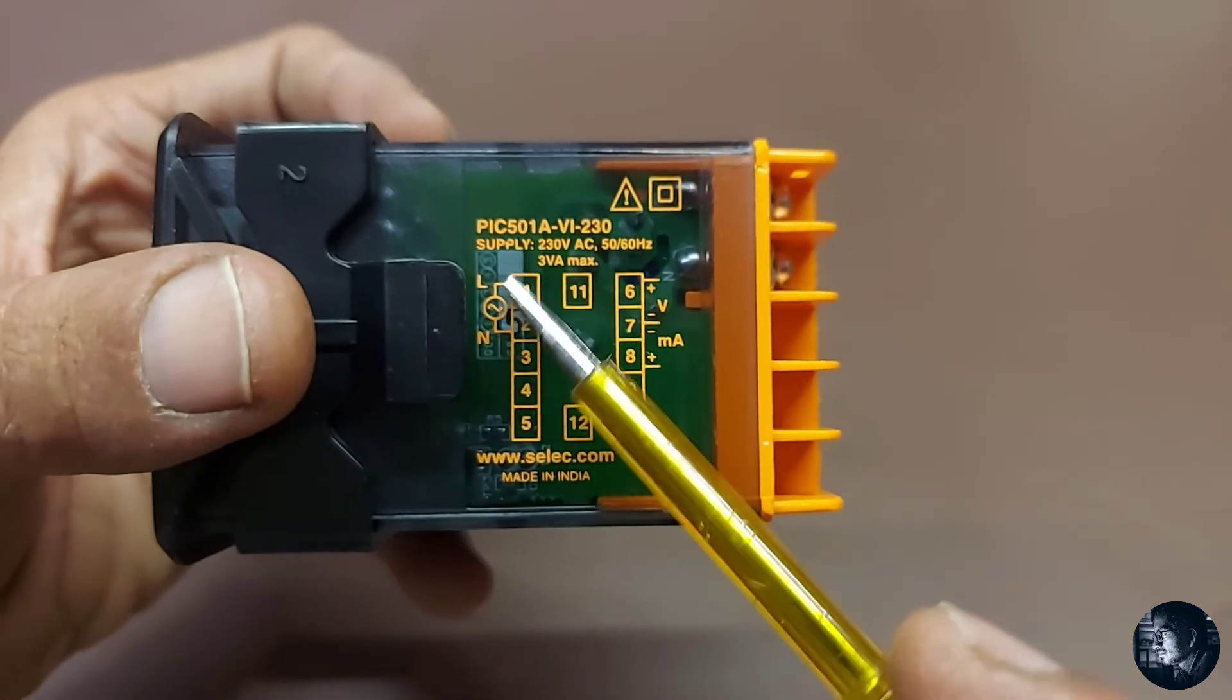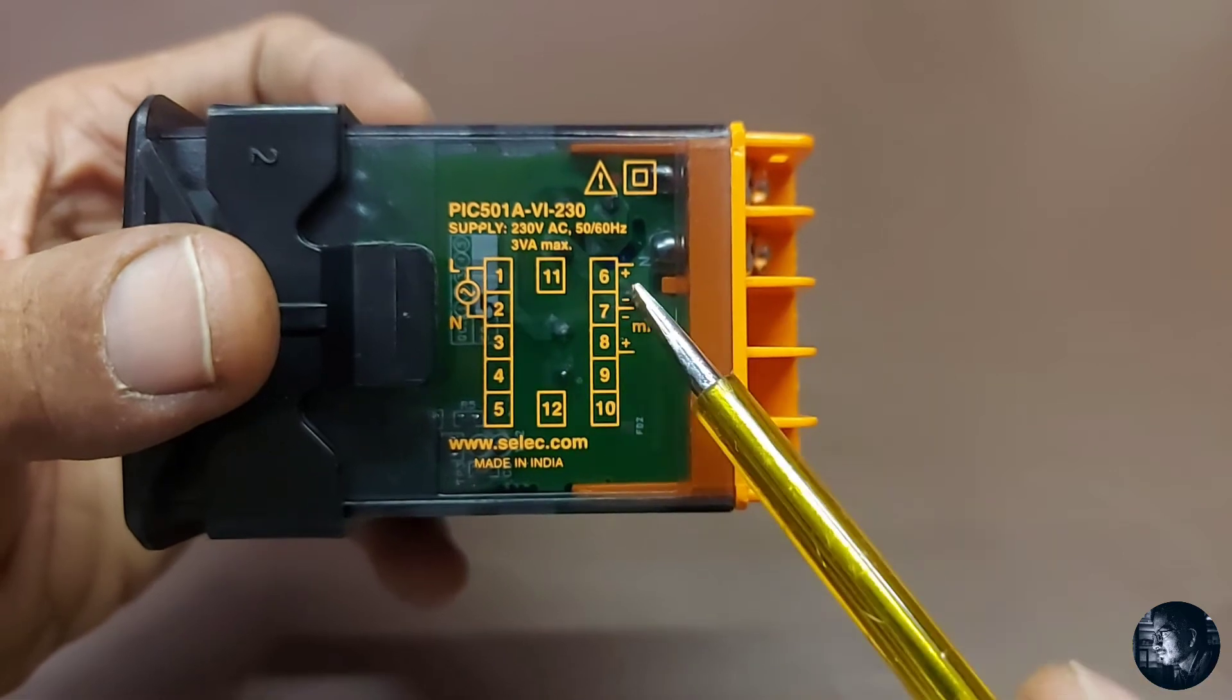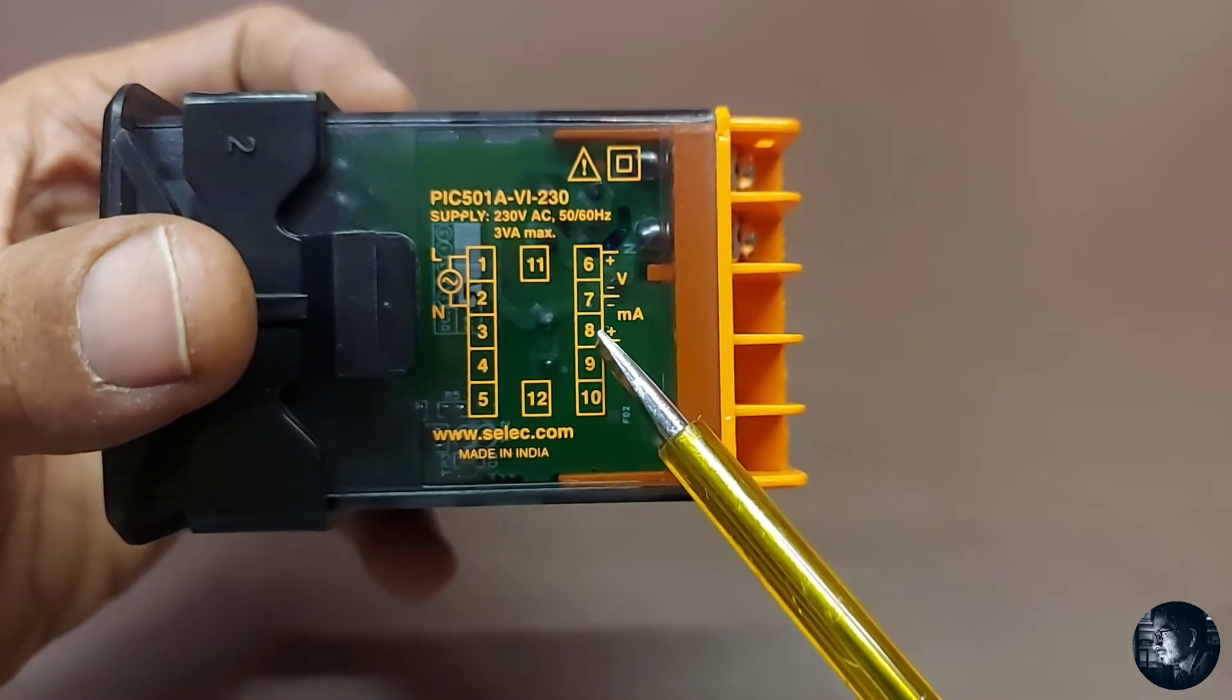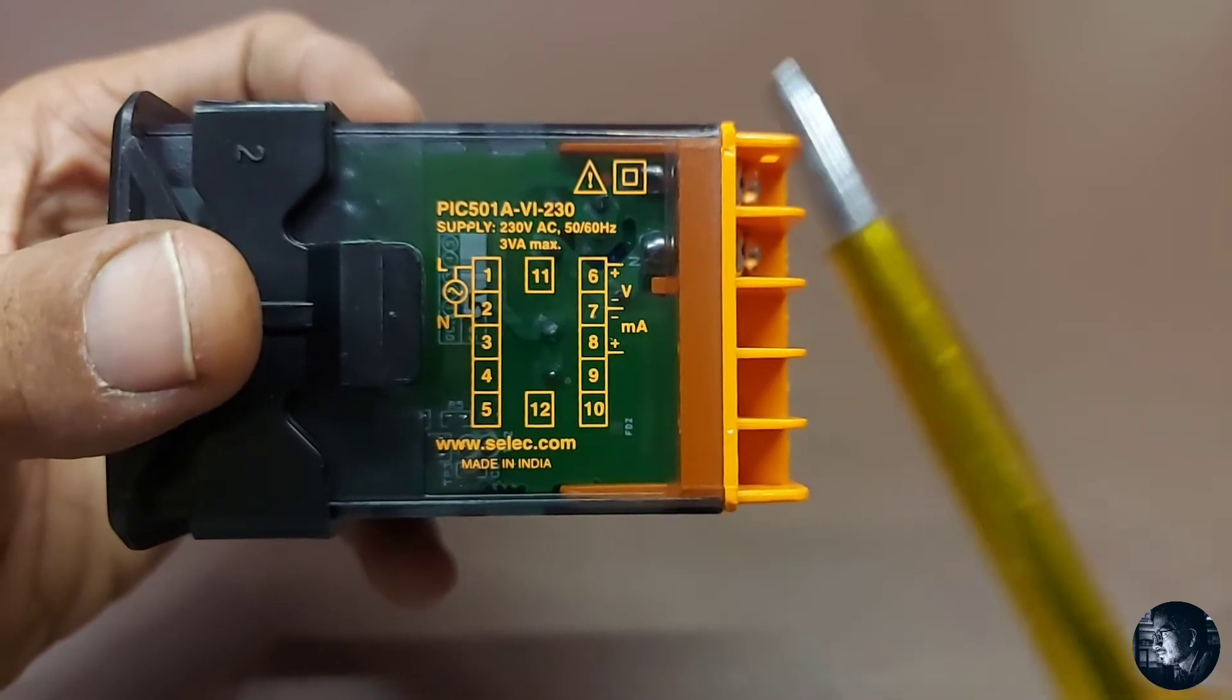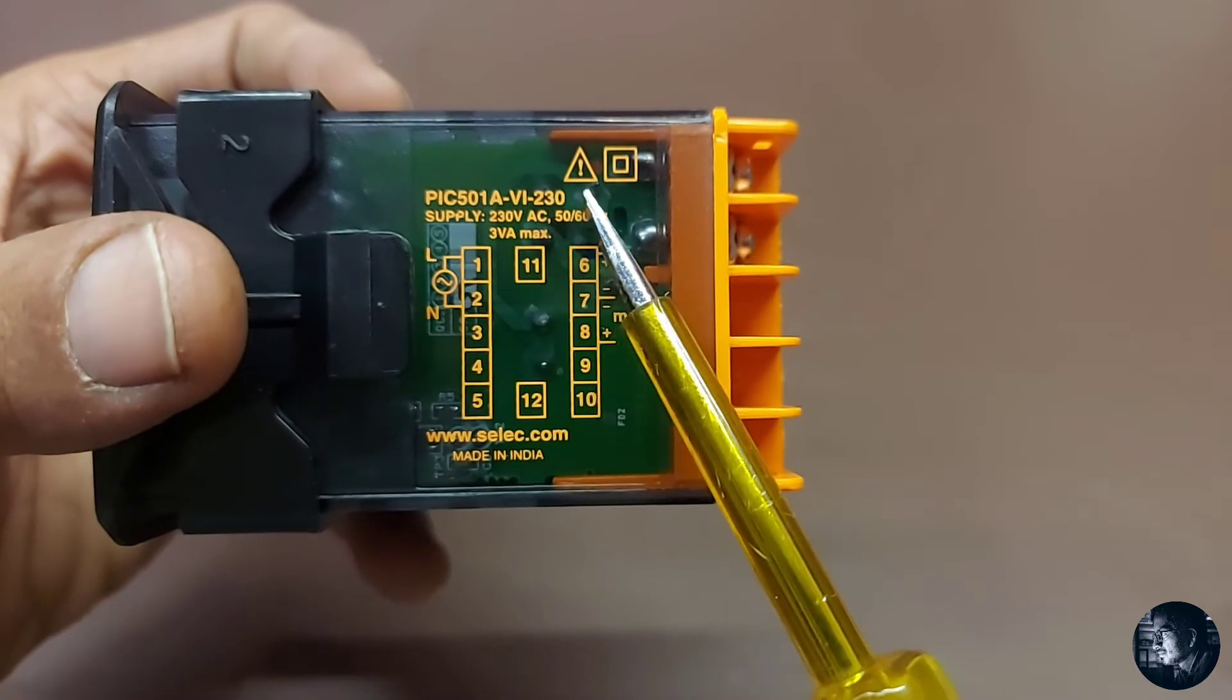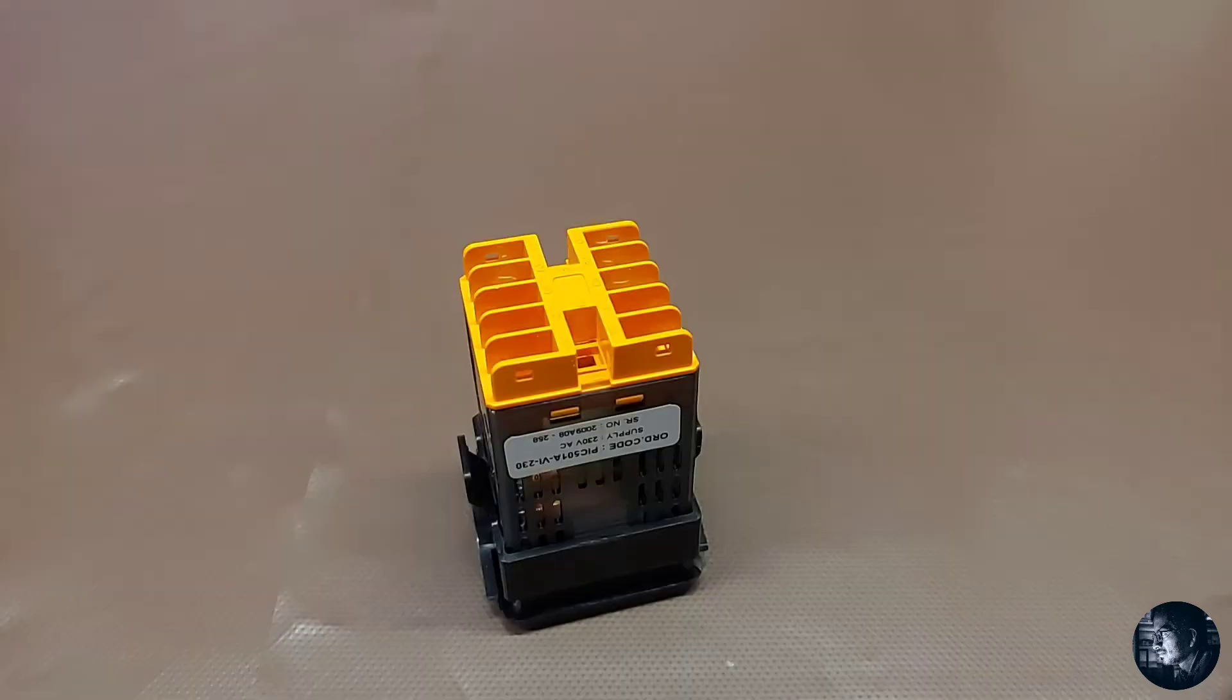Terminals one and two are phase and neutral. The auxiliary supply for the indicator: terminals six, seven, and eight - seven is common voltage (0V), eight is positive milliampere, six is positive 10V. The model PIC501A-VI-230 requires 230V AC supply. Now let's connect the AC supply and analog input wiring.